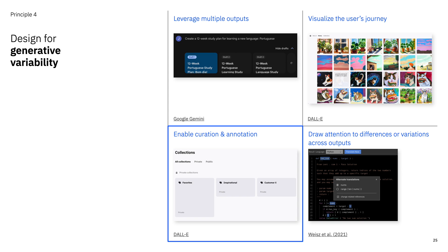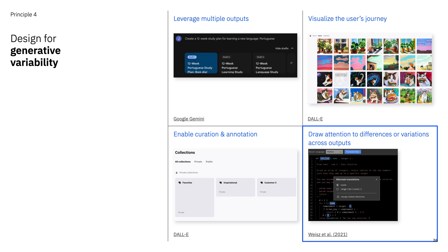Users will also need some way to manage all of the outputs they've generated. Features like DALL-E's collections that help them curate, annotate, organize, label, search, and filter can really help. Finally, in some use cases like source code translation, the multiple outputs produced by a generative model may all look the same. This is a prototype interface we developed a few years ago that helps software developers see the subtle differences that exist across a large set of mostly similar code translations produced by a generative model.